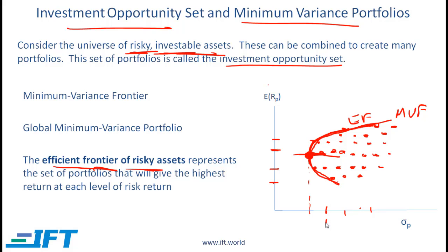At a given level of risk — say 15% — you have portfolio A and portfolio B, both on the minimum variance frontier. Clearly A is efficient and B is not, because an investor would prefer A — the higher level of return at this level of risk. So this part of the minimum variance frontier is called the efficient frontier, and that is what an investor would be interested in.